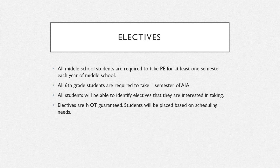Now for electives — the portion many students are looking forward to. All middle school students are required to take PE for at least one semester each year. Based on scheduling, some students may end up with a full-year PE course, but the minimum is one semester unless they have a waiver. Sixth grade students are required to take one semester of AIA, the social-emotional class, and you're automatically placed in it. All students will be able to identify electives they're interested in, and we'll discuss what's available this year and what we're adding next year.